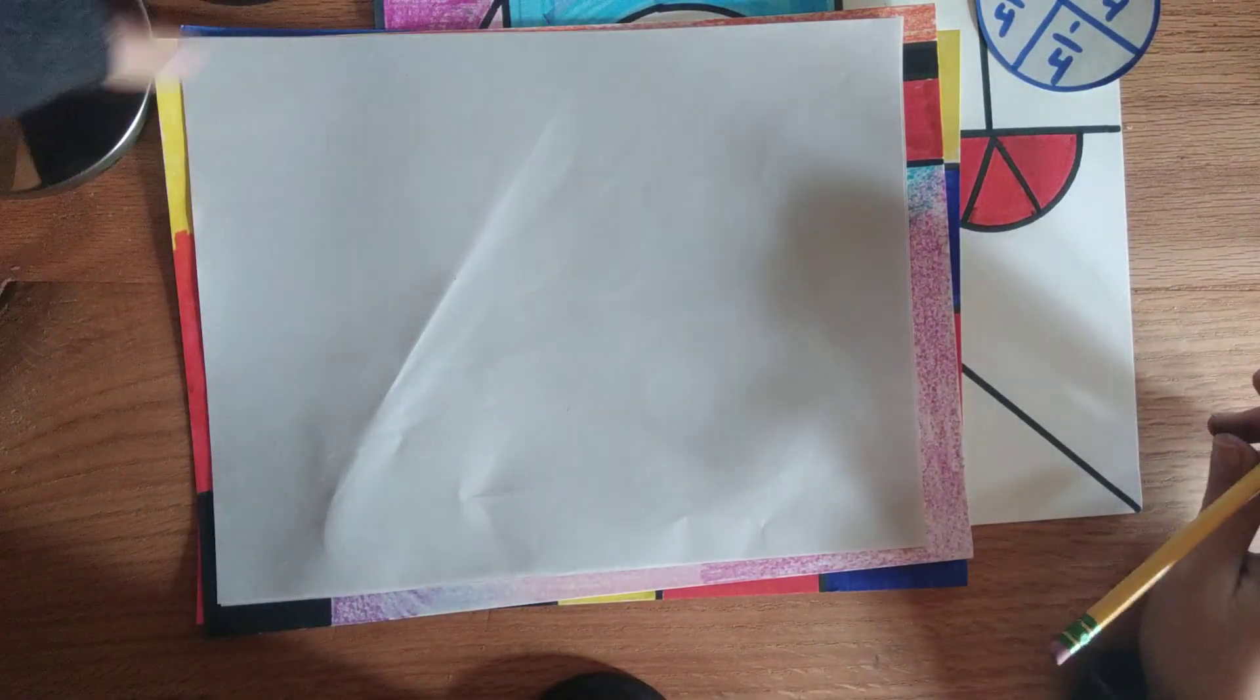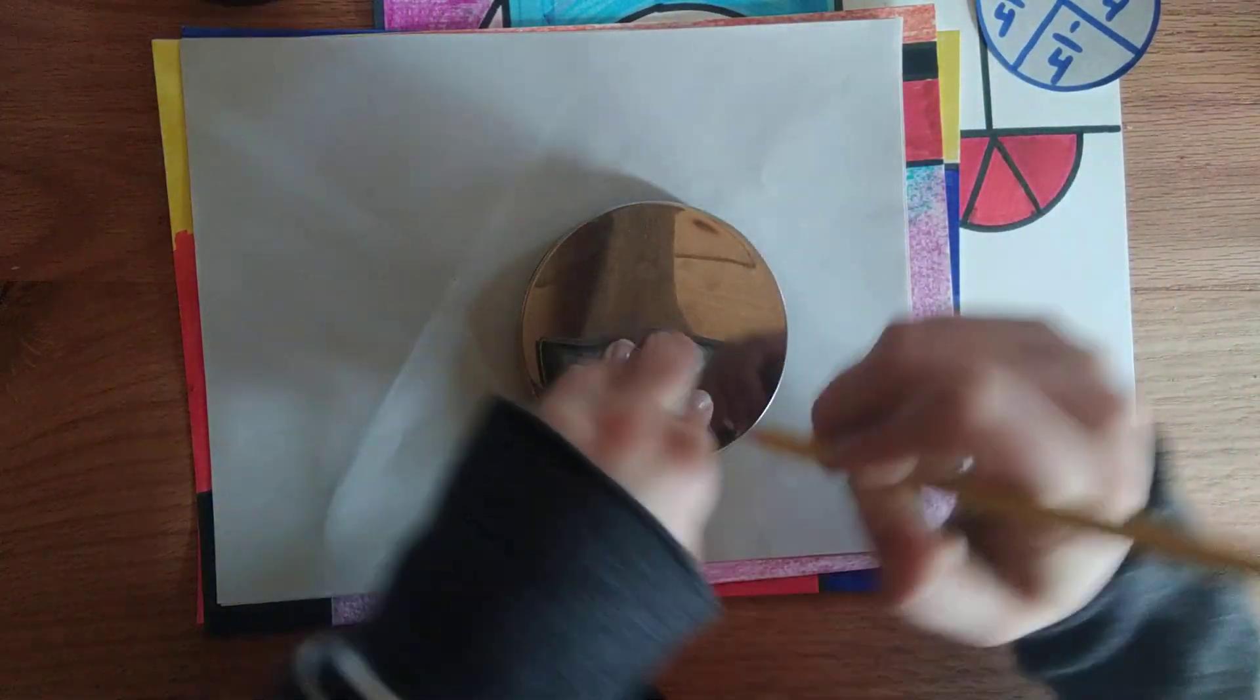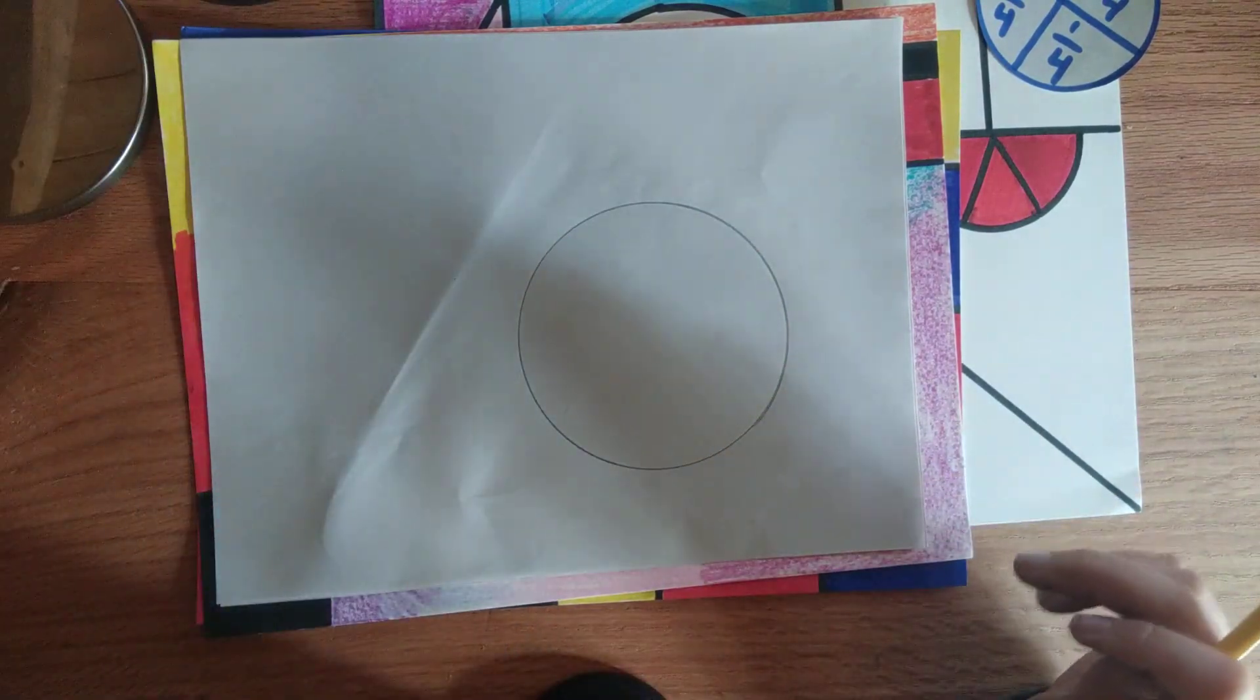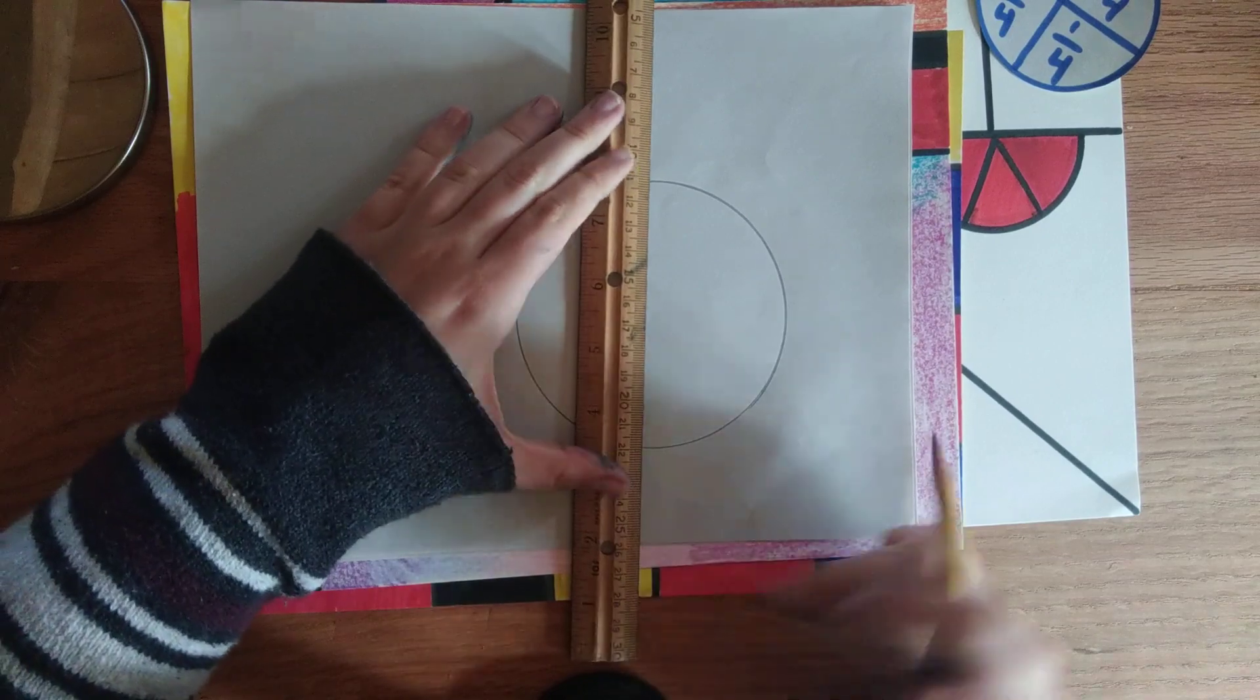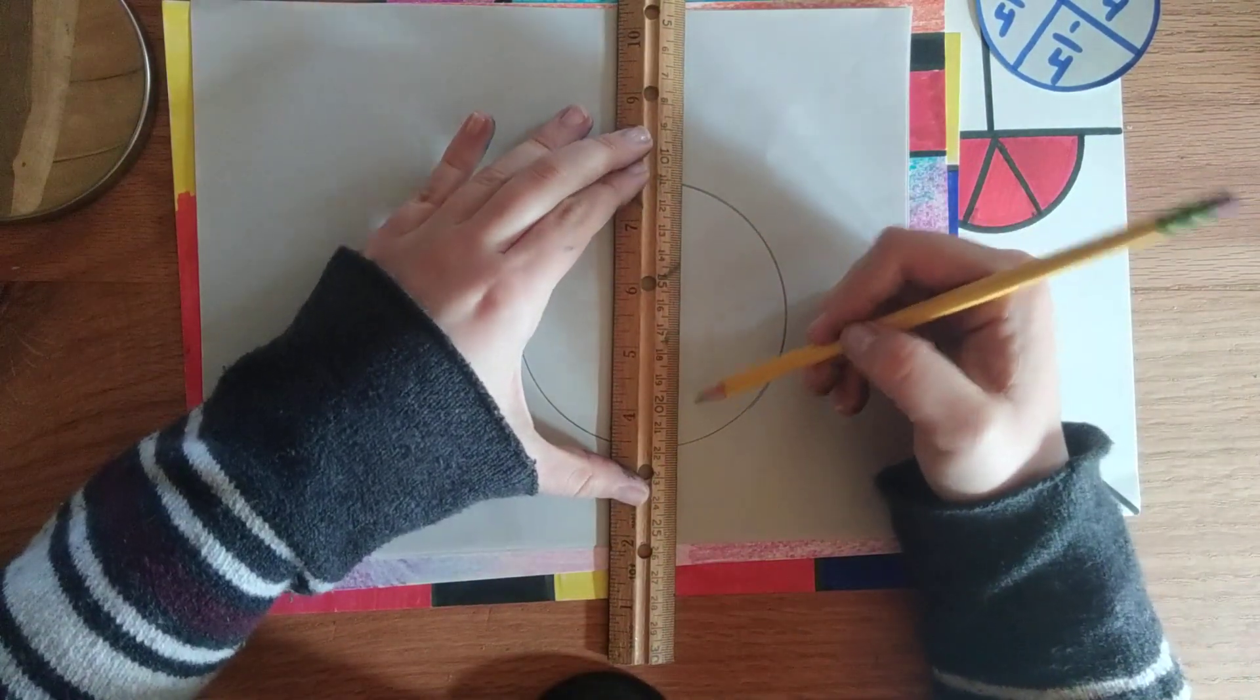On my piece of paper, I'm going to trace something that I know is round. Okie doke. Now I'm going to put my ruler in the middle. Kind of line it up. I don't need to put my ruler in the center because I want to draw a line on one side.